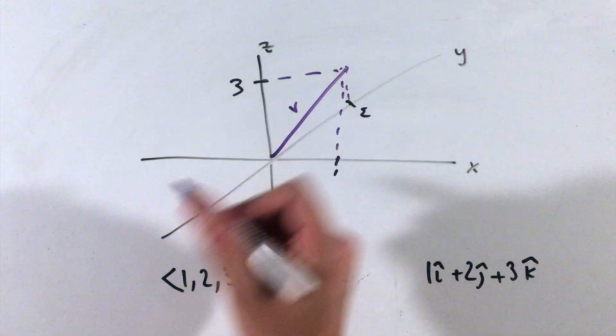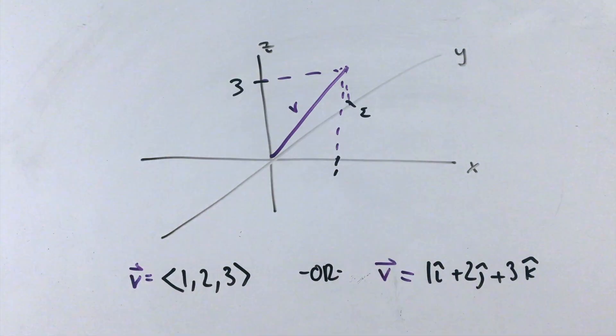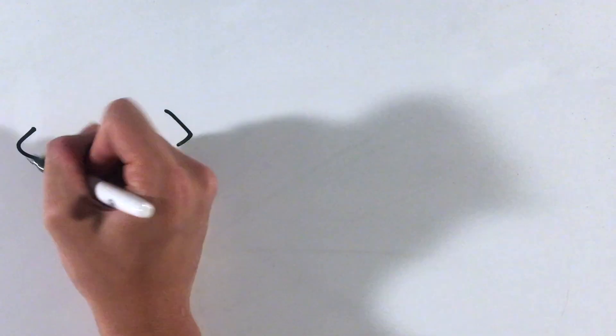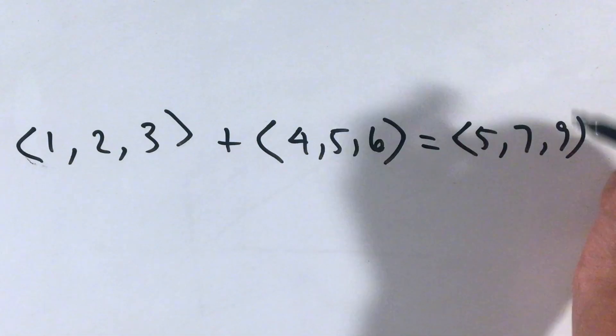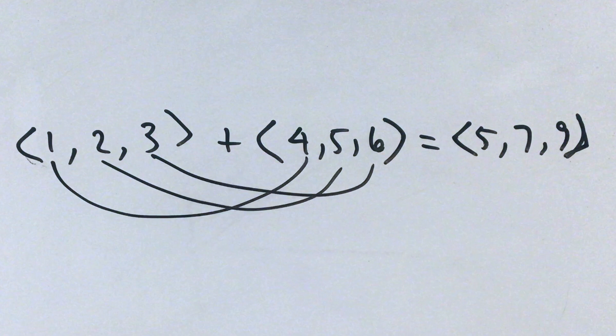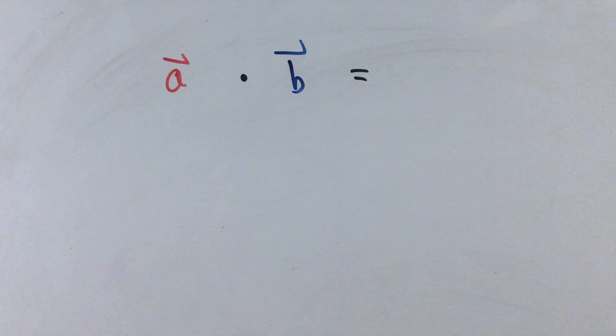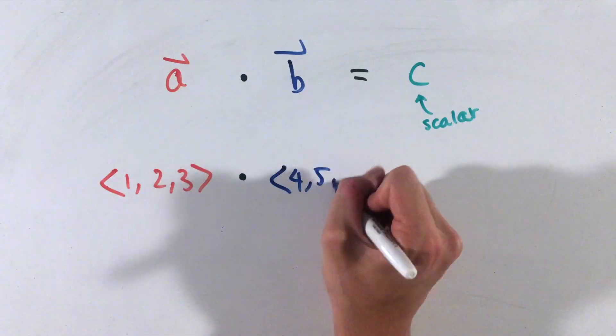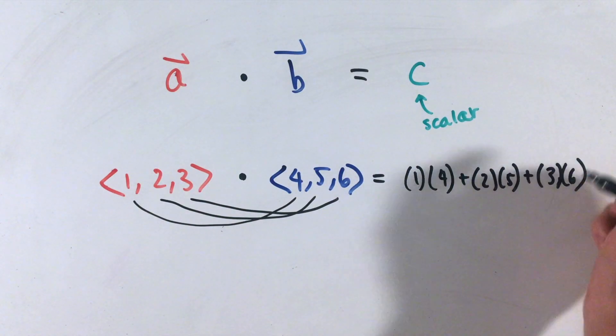To write these vectors as variables for equations, just add an arrow on top of a letter of choice. While adding and subtracting vectors simply entails adding or subtracting each component together, there's actually two ways to find the product between vectors. The dot product, written like this, turns vectors into a scalar. To dot product two vectors, add together the products of each component of the two vectors.